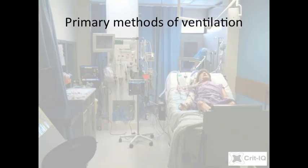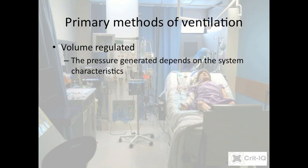In essence, ventilation is the delivery of a volume of gas to the patient's lungs, and then allowing it to passively flow out. There are two main ways of regulating this process. In the first, a ventilator pushes in a fixed volume of air, and the pressure generated is dependent on the characteristics of the system — including the ventilator circuit, the endotracheal tube, the lungs, and the extrapulmonary structures. This mode is known as volume-regulated or volume-cycled ventilation.